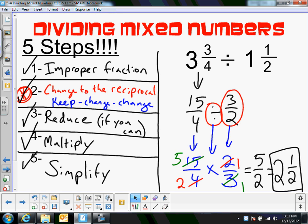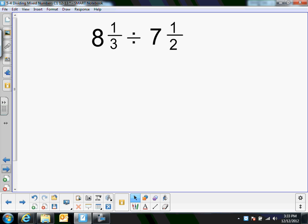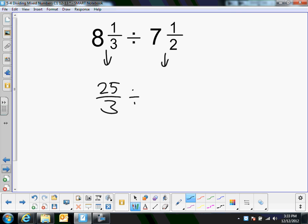So I'll just do one more example. You can pause it and try it yourself if you like, or you can do some of the many examples that are on my website. So first step, make it to improper fractions. 3 times 8 is 24, plus 1 is 25 thirds, divided by 2 times 7 is 14, plus 1 is 15, 15 halves. I'm going to keep change change now, and multiply by the reciprocal. So keep this at 25 thirds, change this to times, multiply by the second number's reciprocal, which is 2 fifteenths.